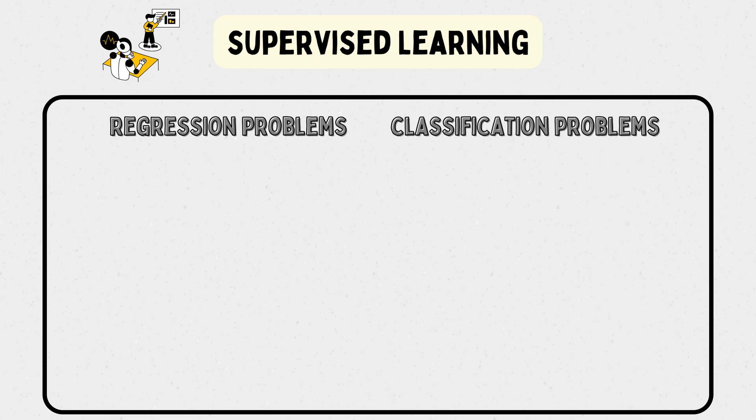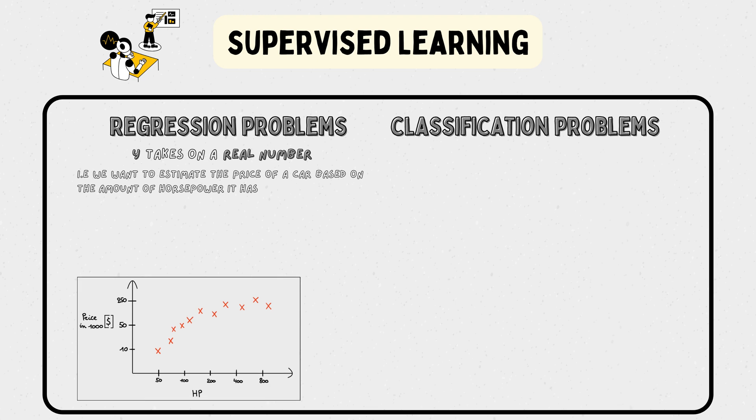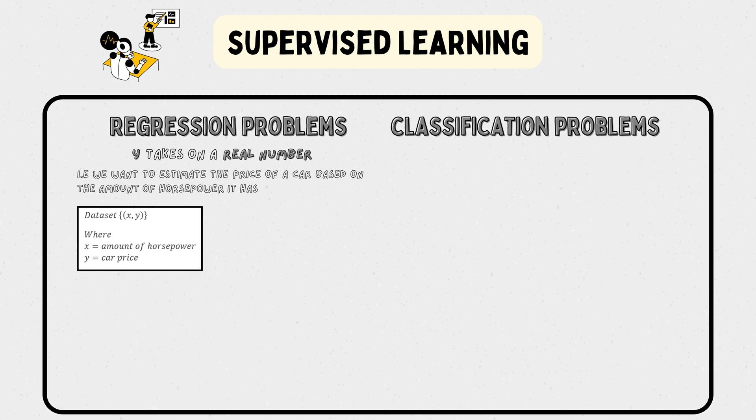The former is a problem where y takes on a real number. For example, we want to estimate the price of a car based on the amount of horsepower it has. We can give the algorithm a data set like this. Next, the algorithm can be trained and might conclude to use a straight line as model for this problem. However, in this case our learning algorithm might use a second order polynomial as it fits the data better.